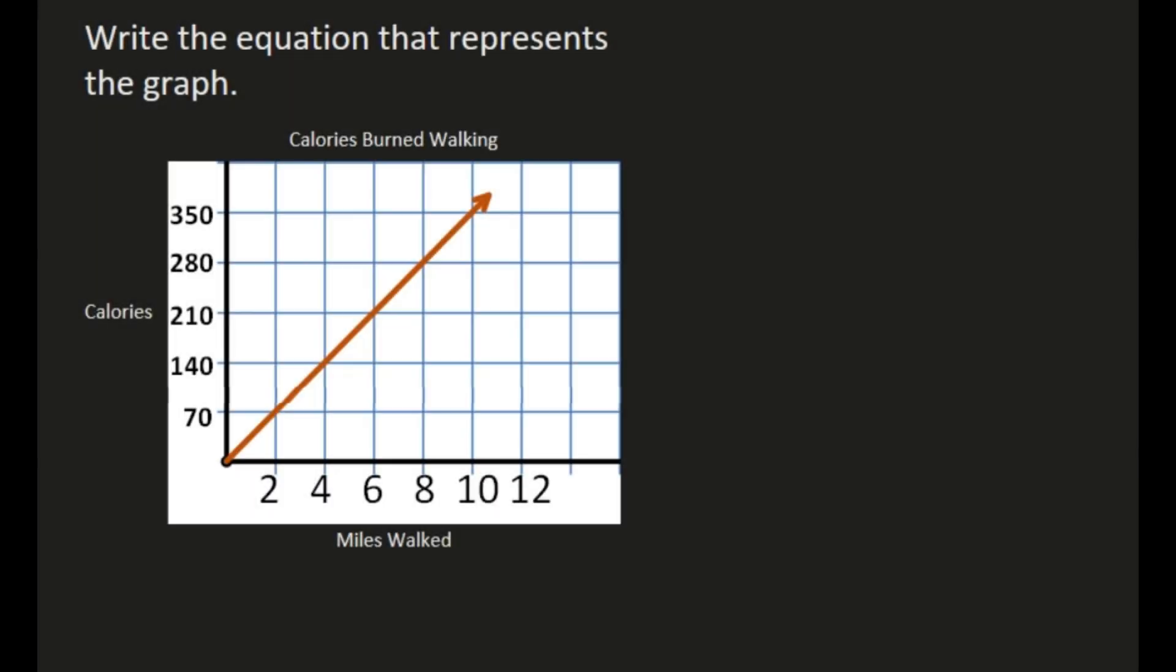This example asks us to write the equation that represents the graph that we see below with calories burned while walking. And I noticed that it goes through the origin and is a linear graph, so it is a proportional relationship. So we'll use the formula y equals kx, where k is our constant of proportionality and is equal to y over x. So I'm going to need to choose a point on this graph where I can get an x value and a y value in order to calculate my constant of proportionality.